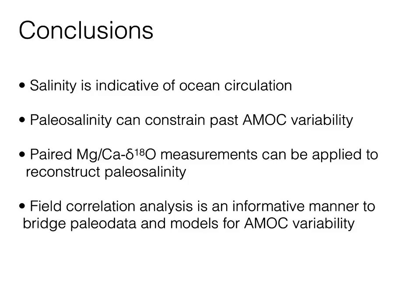In conclusion, salinity is indicative of ocean circulation, and paleosalinity has the potential to constrain past AMOC variability. The paired delta-18O and Mg/Ca measurement in foraminifera can be applied to reconstruct paleosalinity. Field correlation analysis can bridge paleo data and models, incorporating uncertainties, to connect insights from disparate records to large-scale Atlantic Ocean circulation.